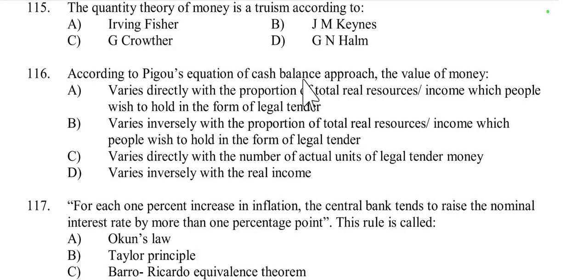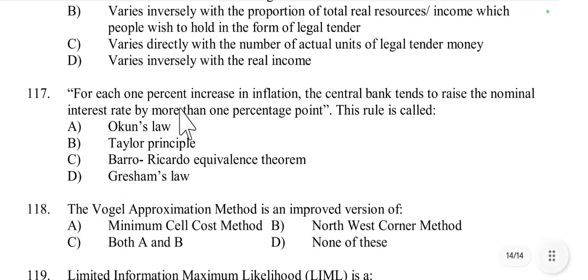Question number 116: According to Pigou's cash balance approach (Cambridge version of the quantity theory of money), the value of money varies inversely with the proportion of total real resources or income which people wish to hold in the form of legal tender. As people hold a greater portion of their income as cash balances, the value of money falls. Option B is correct.